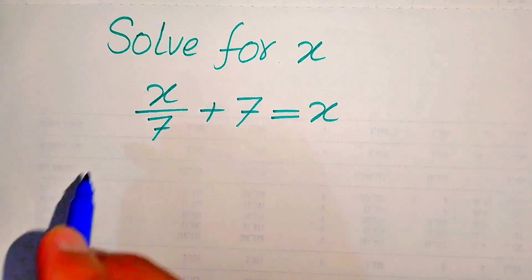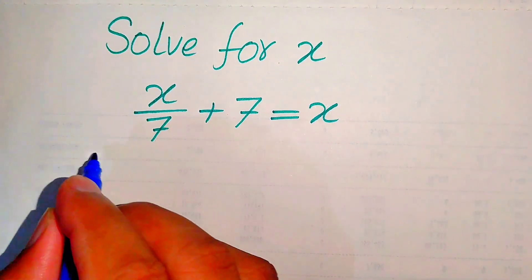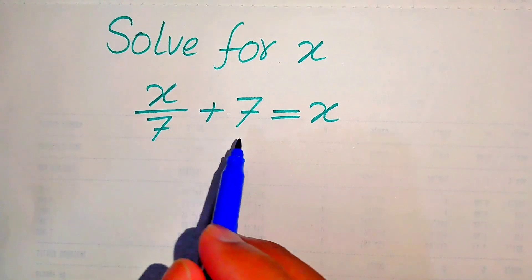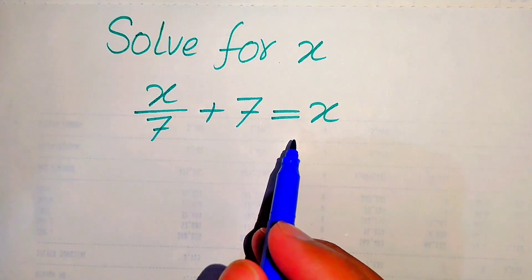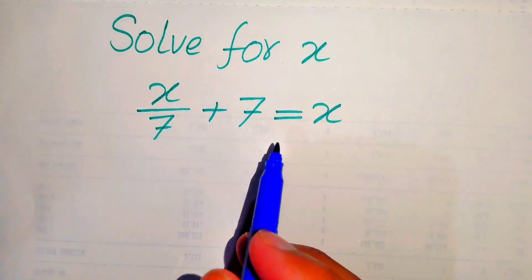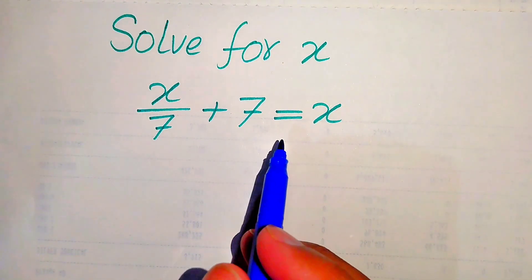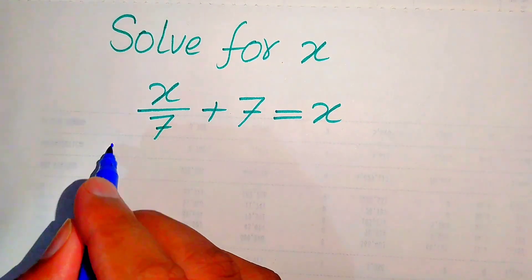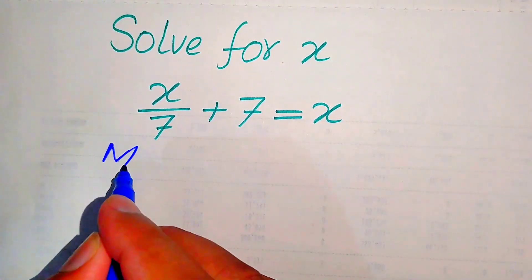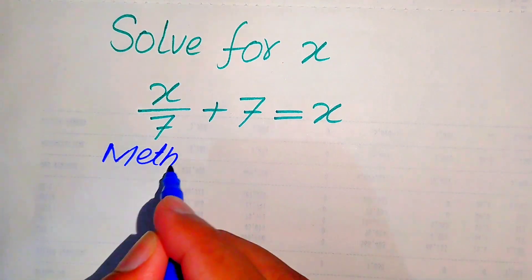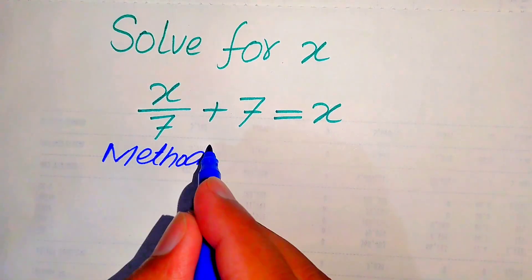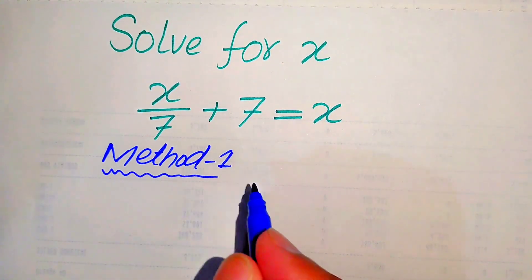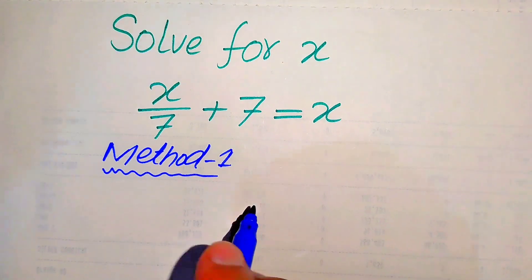Hello everyone, how to solve this problem for the values of x if we have x over 7 plus 7 equals x. I can give you two methods and I hope you like both of these methods, but if you have any other method please write it in the comment section.